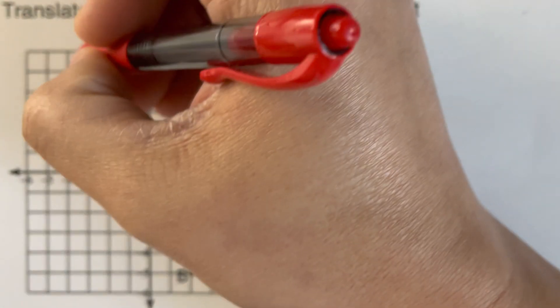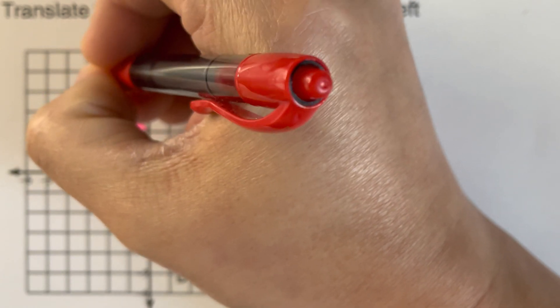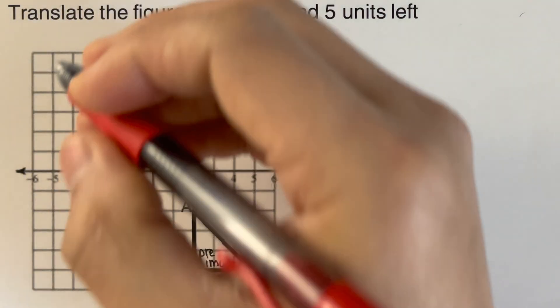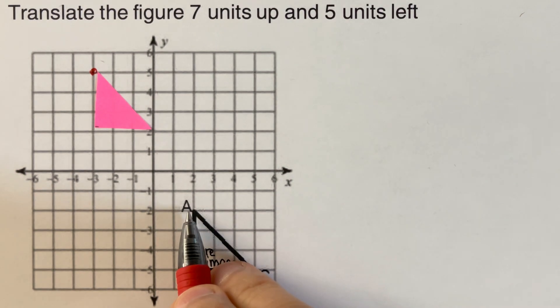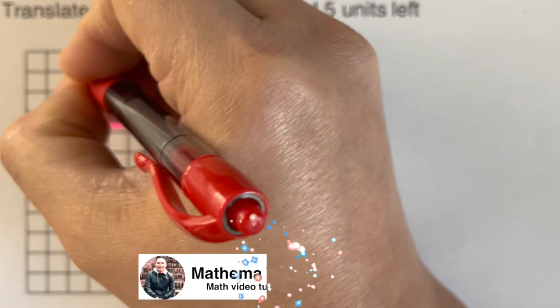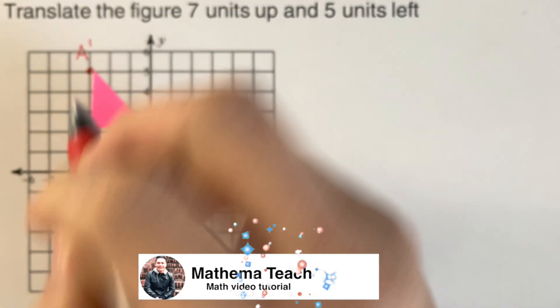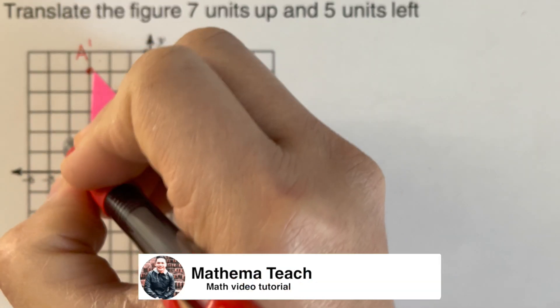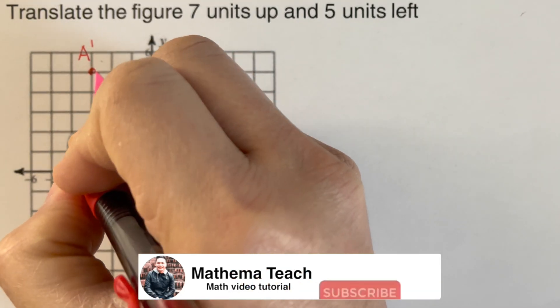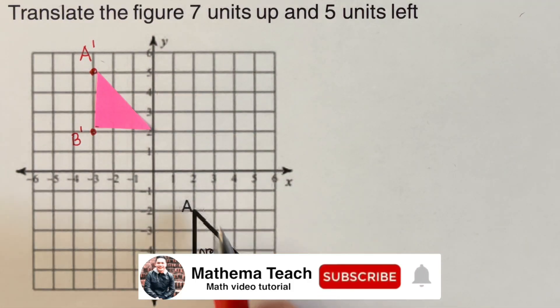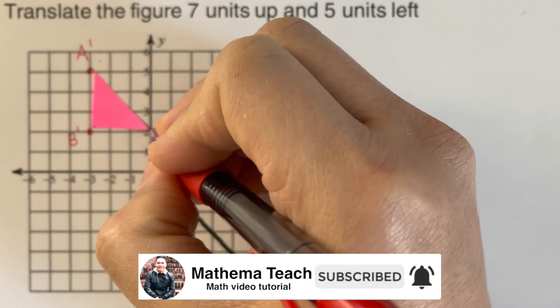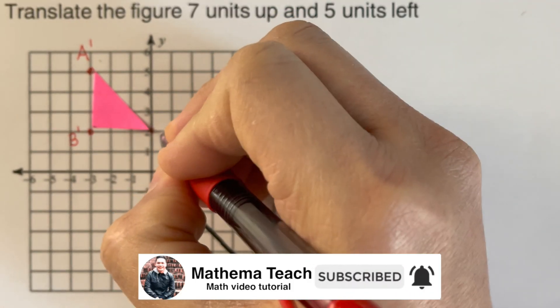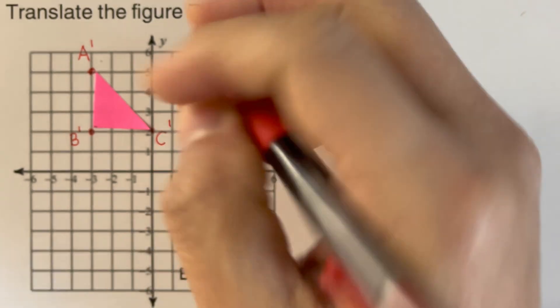So we can go ahead and say that this is the first vertex. This right here corresponds to A, so we can go ahead and name this as A prime. And then this vertex corresponds to B, so we're going to name this as B prime. And then this vertex right here corresponds to C, so we can name this as C prime.